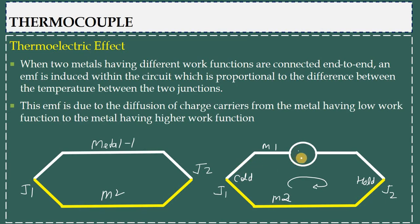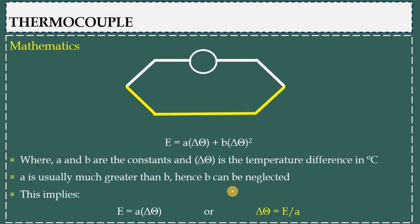This EMF can be measured by using a moving coil device within the circuit, which is E. This E is directly proportional to the change in temperature, that is delta T, which is the temperature difference between junction 2 and junction 1.